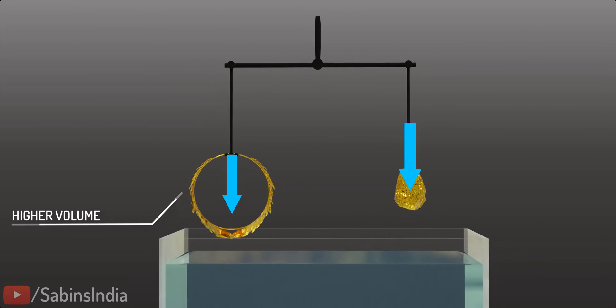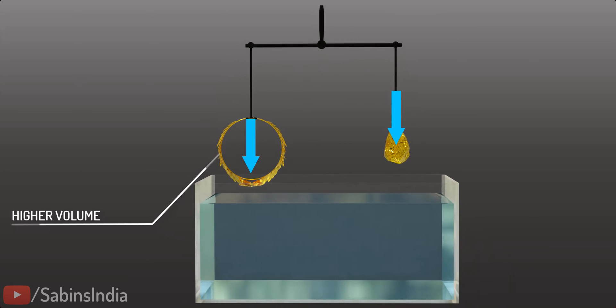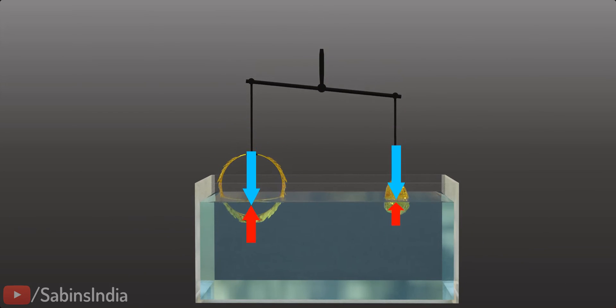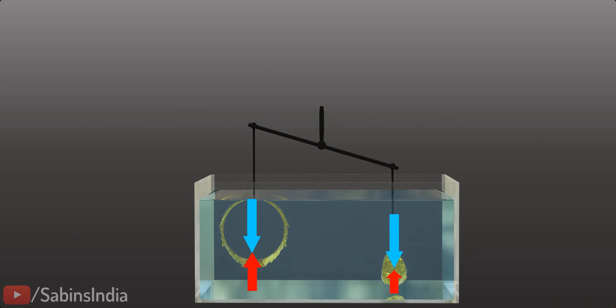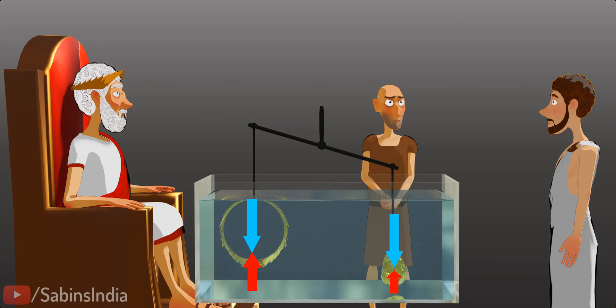He immersed the weight balance in water. The buoyancy force on the crown was more than the gold lump due to its higher volume. This means the net force on the gold lump would be more than the net force on the crown. A balance would tilt due to this force difference. Archimedes discovered the goldsmith's cheating by measuring the difference in buoyancy force.